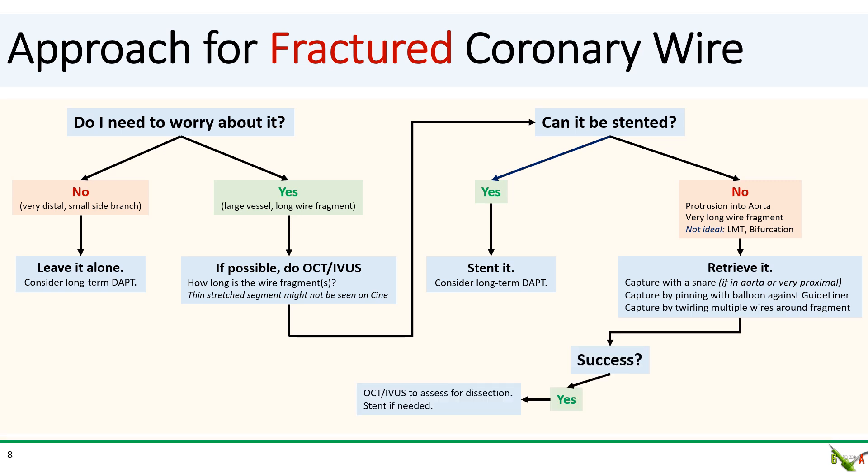If you're able to successfully capture your wire fragment, I then suggest doing a follow-up OCT or IVUS to make sure everything is out and that there was no dissection. You can place a stent if needed at this point. If you're not able to capture the wire fragment, then reconsider whether you can stent over the wire, even if less than ideal — for example, on the left main or at the bifurcation. If that is not possible, then you'll have to call for surgical removal.